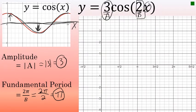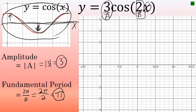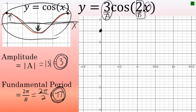This graph will have the same general shape as y equals cosine of x, but with a different amplitude and fundamental period. The graph begins three units above the x-axis and one cycle ends three units above the x-axis after pi radians, because the fundamental period is pi. I'm placing a dot to represent this wave ending one cycle after pi radians.